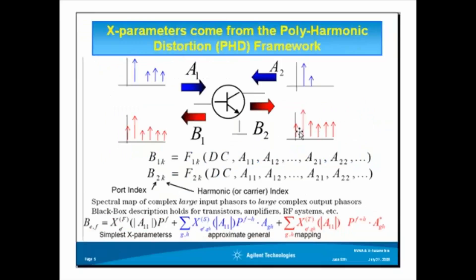This is a representation of the large signal input tones and reflected tones of a device under test. A1 is the incident wave, and B1 is the wave that is reflected back at the input port. B2 is the transmitted wave at the output, and A2 is the reflected wave that could be coming from the next stage. So, in the PHD framework, there are three terms that describe these waveforms,